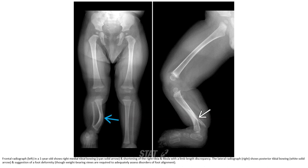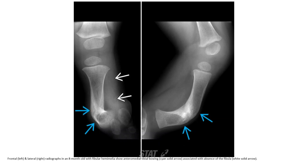Right tibial bowing and shortening of the right tibia and fibula with limb length discrepancy. Lateral tibial bowing is suggested of a foot deformity. Weight-bearing views are required to adequately assess disorders of foot alignment. This is a frontal and lateral radiograph in an age-months-old with fibula hemimelia showing anterior-medial tibial bowing associated with absence of the fibula.